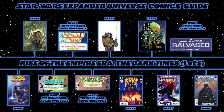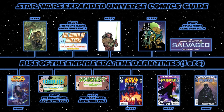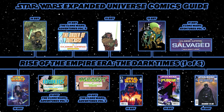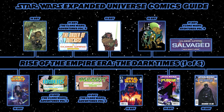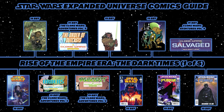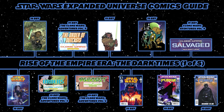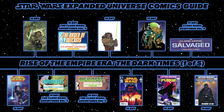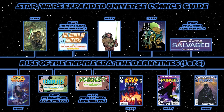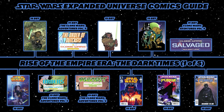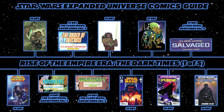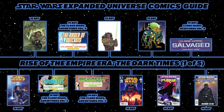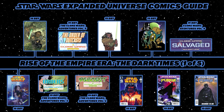Moving on to the Dark Times part of the Rise of the Empire era. This begins with Revenge of the Sith, which received an official comic book adaptation. Revenge of the Sith is followed by Republic: Hidden Enemy, issues 81 through 83, focusing on Luminara Unduli during the end of the Clone Wars.